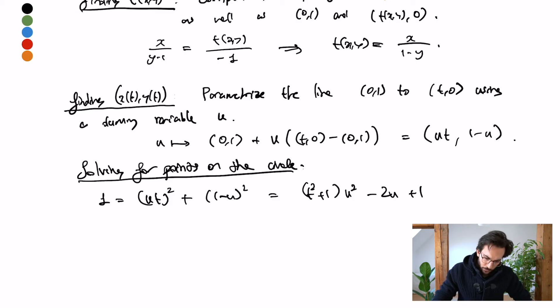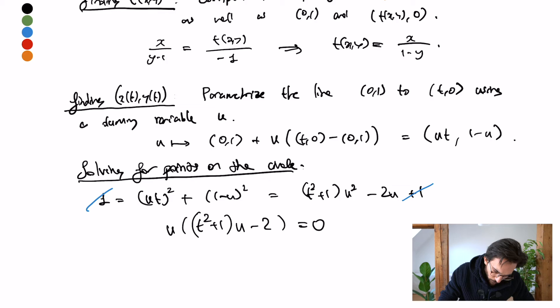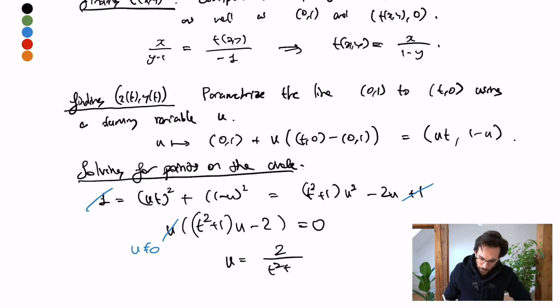Now, I can cancel 1 from both sides and then the equation I get is that u times (t squared plus 1) times (u minus 2) equals 0. Now, the point u equals 0 on my line corresponds to the north pole. I already know this is there. I'm interested in the other point which means I can cancel u and then solve for u.